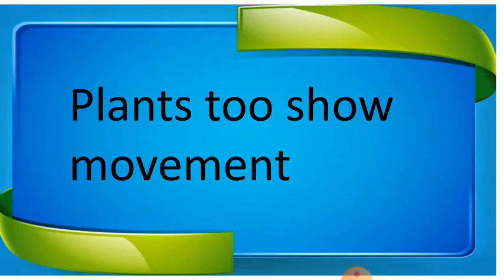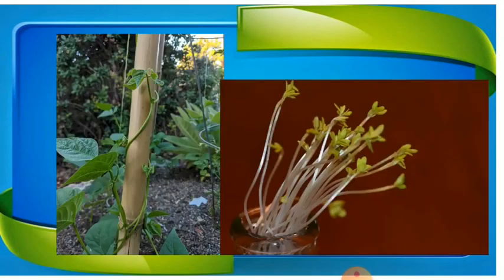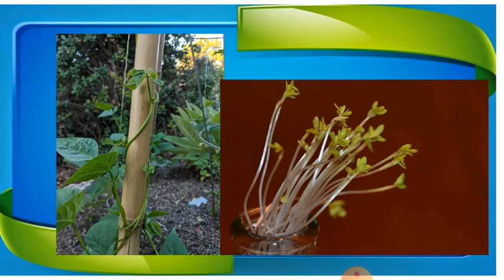Plants also show movement — they will not move from one place to another directly, but there is visible movement. When a plant has a weak stem, it starts climbing on a supportive object — that is also called movement. When seedlings are planted, they move towards the light — this is also called movement in the plant world.